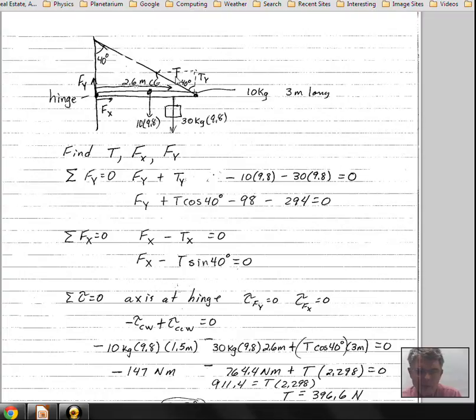The tension in the cable has an upward component, T sub Y. And 40 degrees up there, 40 degrees down here. We would find that T sub Y is equal to T times the cosine of theta. We're next to the side here.